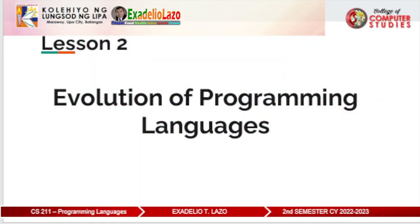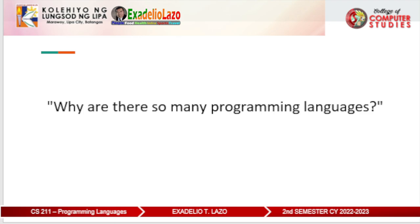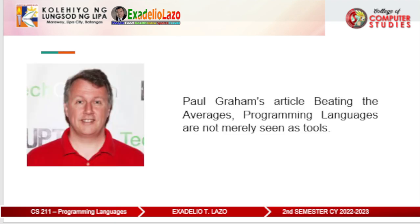Good day everyone, welcome to our discussion for today, which is the evolution of programming languages. The big question is: why are there so many programming languages? You probably asked this question when you first began learning to code. It's perplexing to see so many programming languages, as if they're deliberately designed to confuse newcomers. Many working professional programmers will give you opposing opinions, such as 'Java is dead,' 'real programmers code in C++,' 'Ruby is a toy language,' or 'you are stupid if you don't code in Python.' According to the article written by Paul Graham, programming languages are not merely seen as tools — they also have an impact on how programmers think about their code.